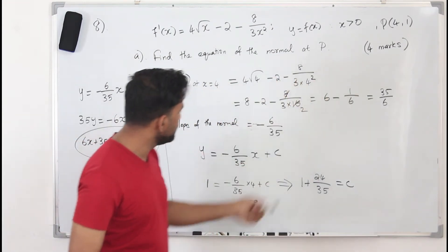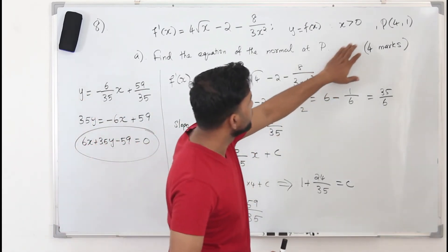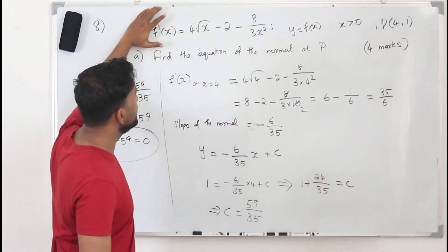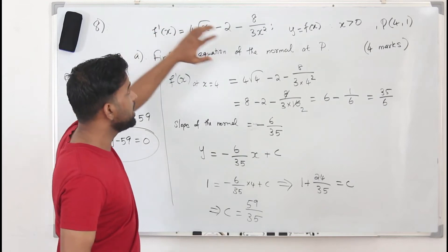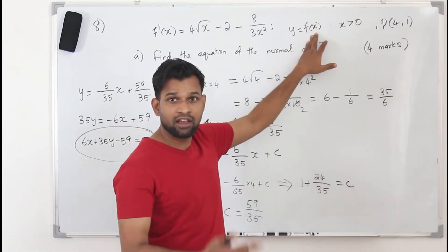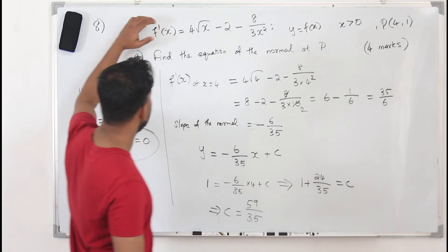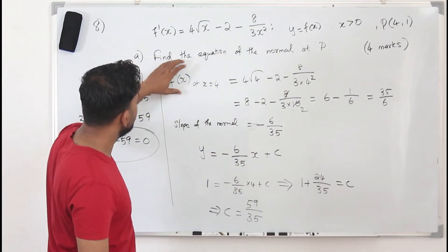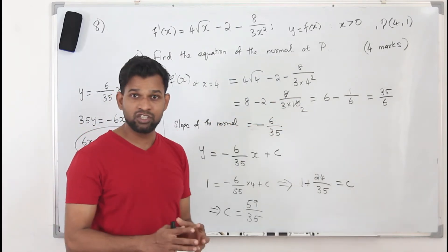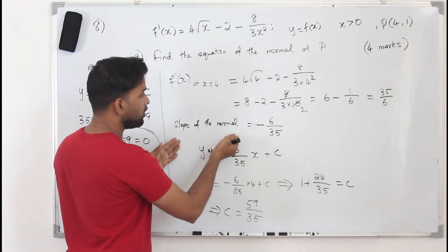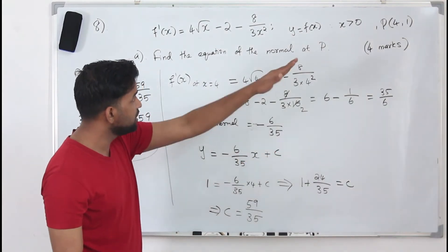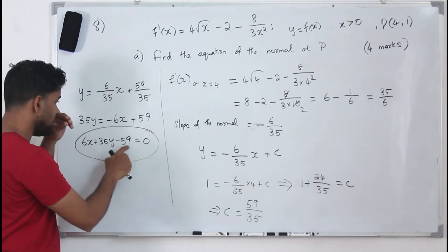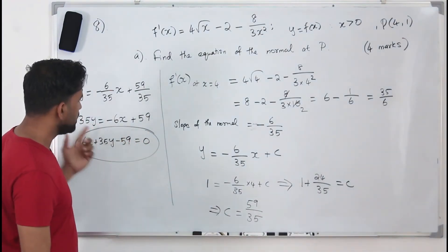This will give you 4 marks if done properly. Take note: in some questions you won't be given the point — just the x-coordinate. In that case you need to find the y-coordinate by substituting x=4 into the actual function f(x), not f'(x). Here, f'(x) is given, not f(x), and that's why the point P(4,1) is provided. So: take the gradient function, replace x by 4 to get the slope of the tangent, find the negative reciprocal for the slope of the normal, use y=mx+c, and find c using the point. Then write in ax+by+c=0 form with integer coefficients.